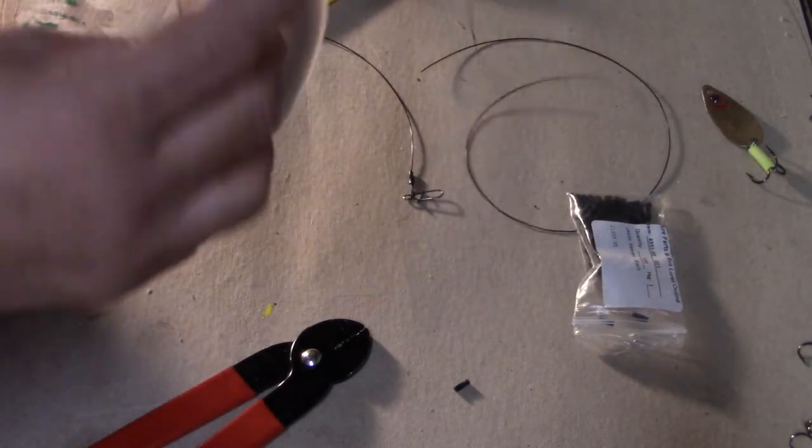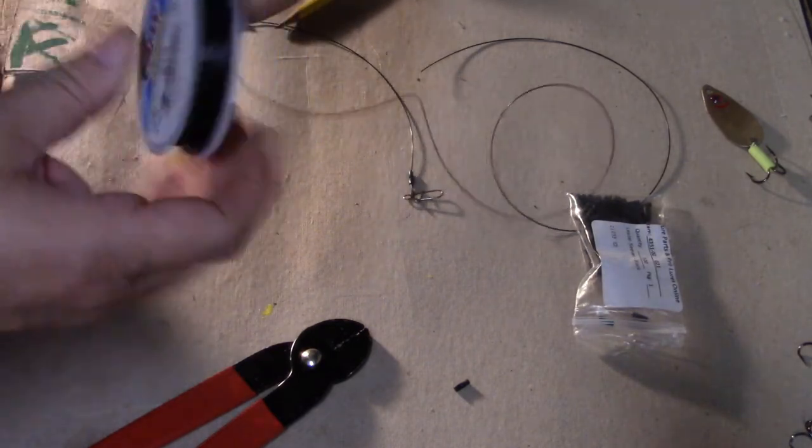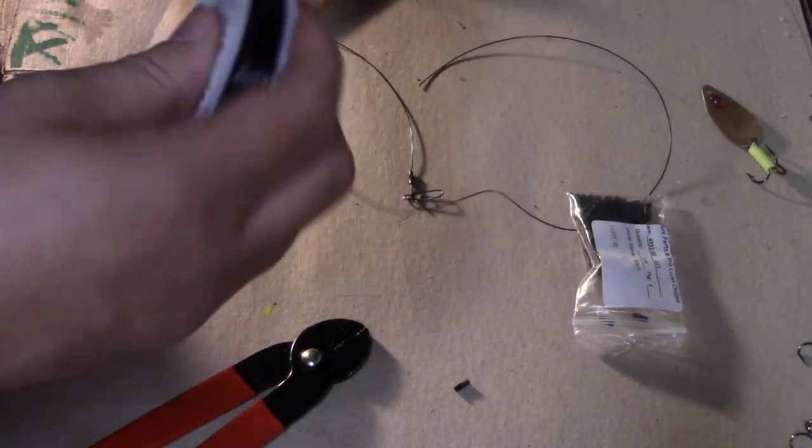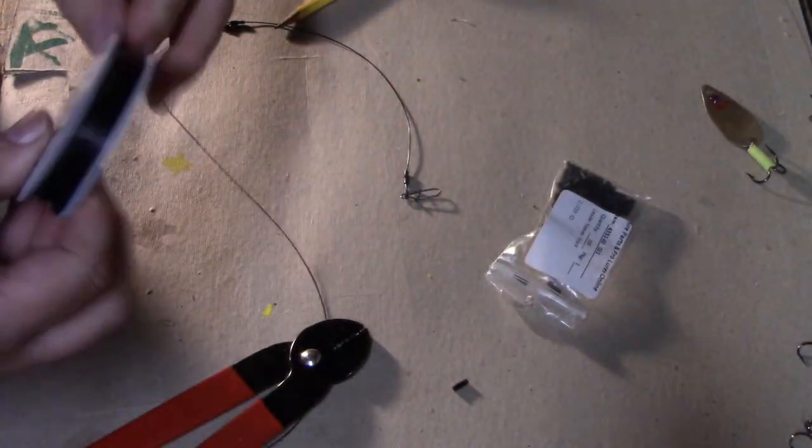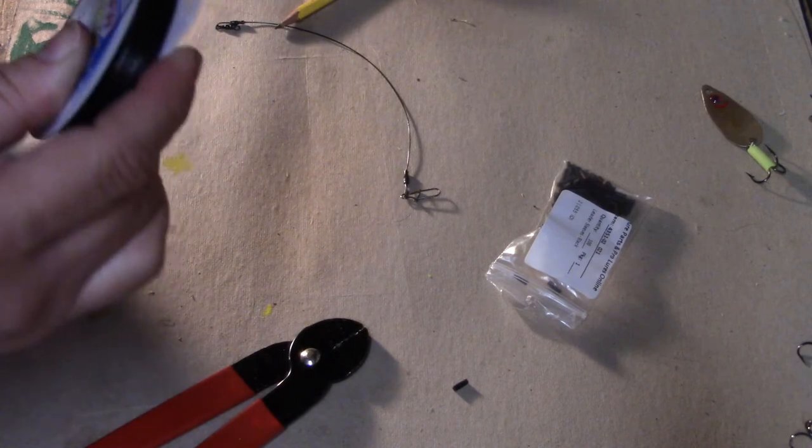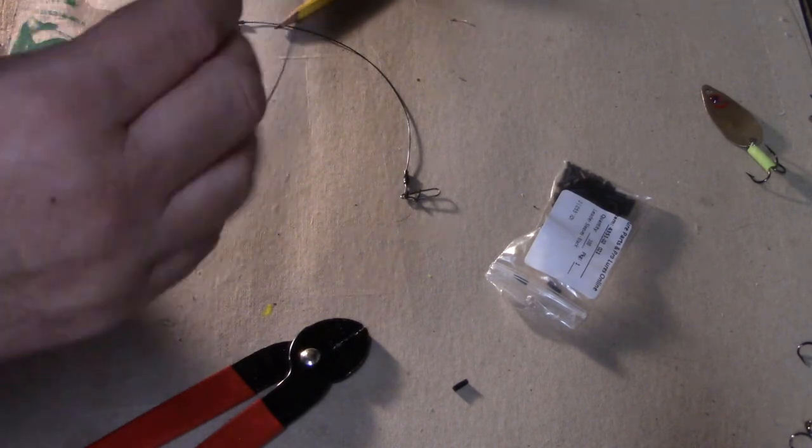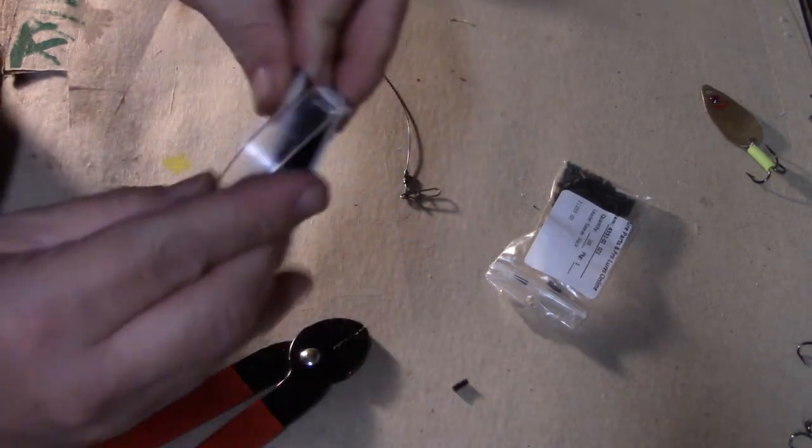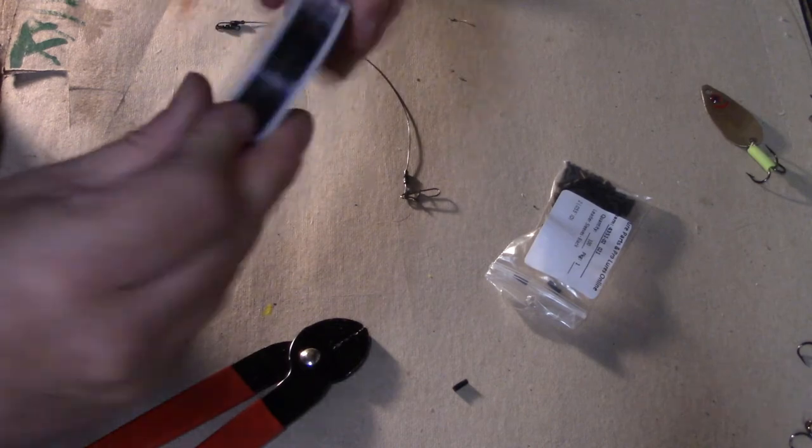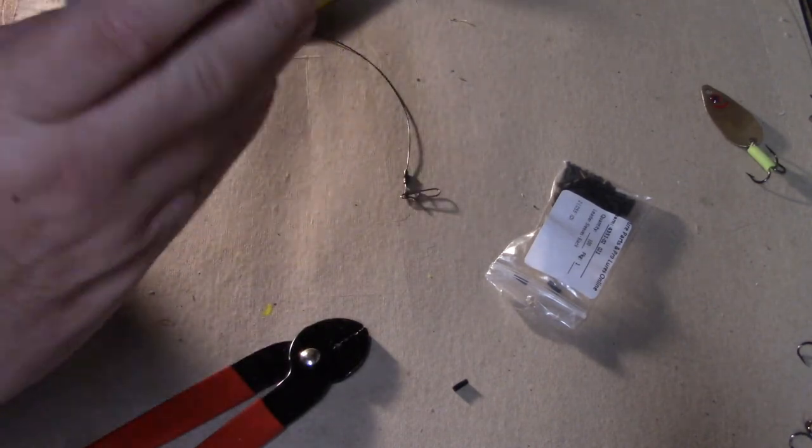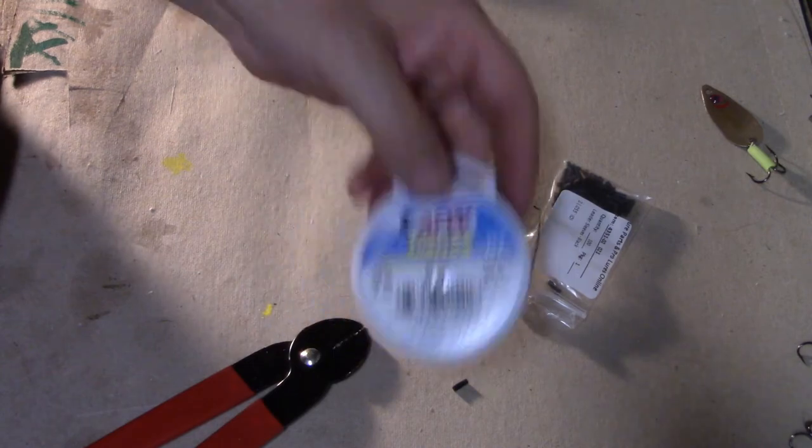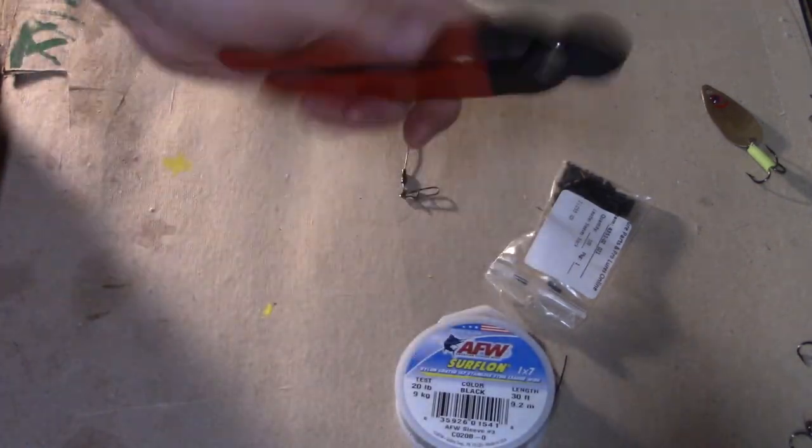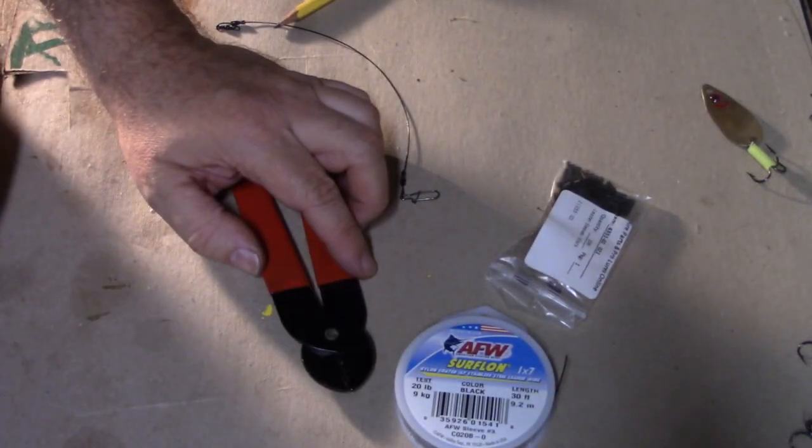You can get this as a kit, I believe, from Jann's Netcraft. You get the pliers, the wire, and some sleeves. You'll have to get your barrels, your swivel barrels, and your snap separately. It's an inexpensive way to do it. Leaders aren't super expensive, so if you don't use many, you might just want to buy a package of them. But if you enjoy making things yourself and you want to save a few pennies, this is all you got to do. Simple. Thanks, see you later.